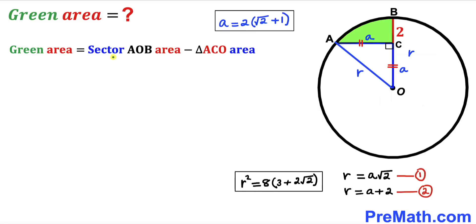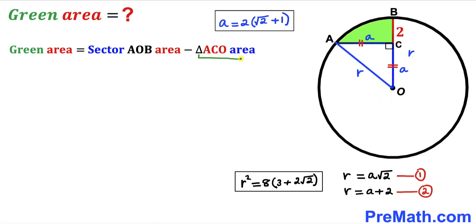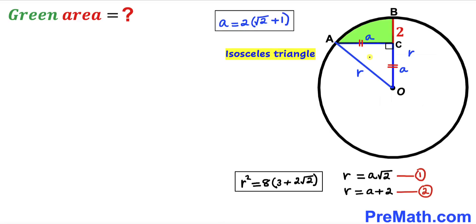The area of the green shaded region equals the area of sector AOB minus the area of triangle ACO. Focusing on right triangle ACO, it is isosceles since AC = OC = a. Therefore both base angles are 45°, with the right angle being 90°, so angle AOC = 45°.